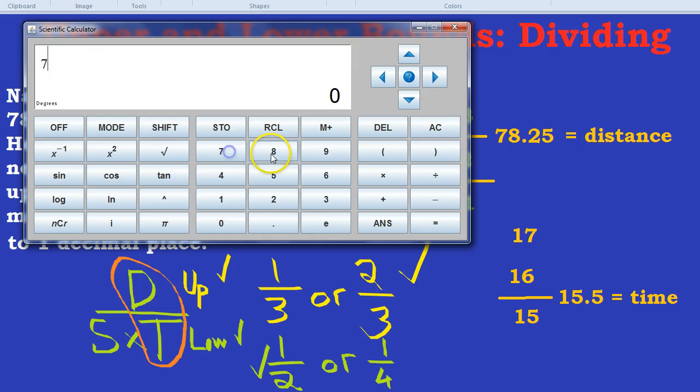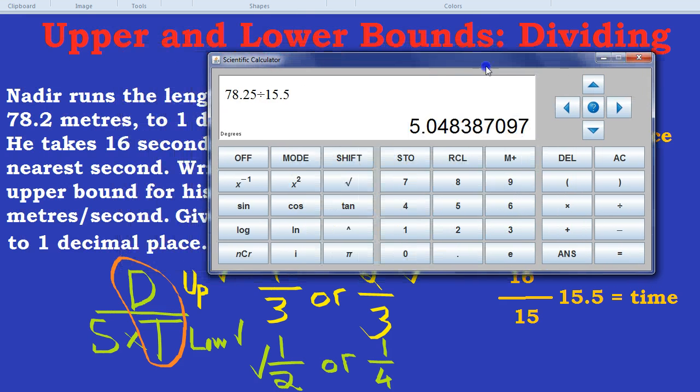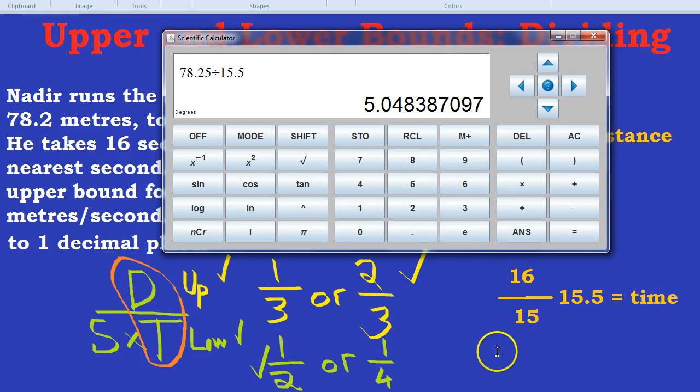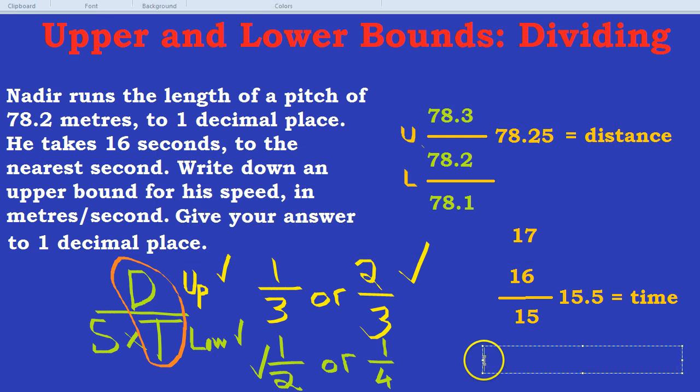Distance divided by time, 78.25 divided by 15.5, which is 5.048. Give your answer to one decimal place. So that would be 5.0. The speed is 5.0 meters per second.